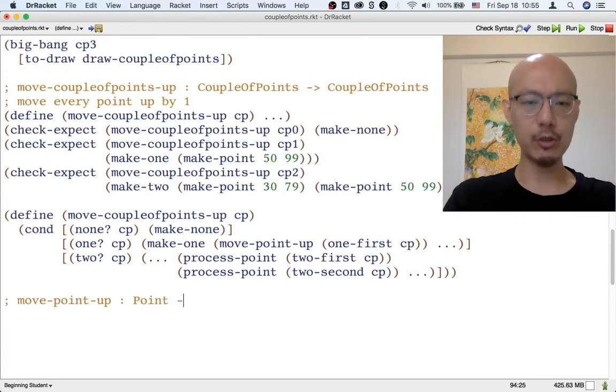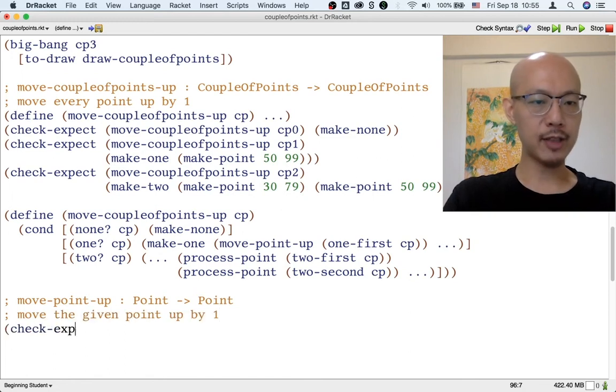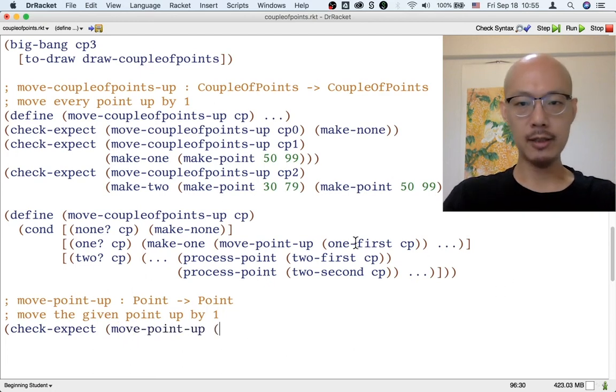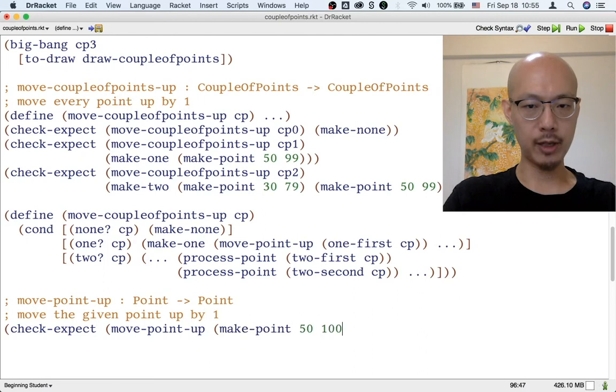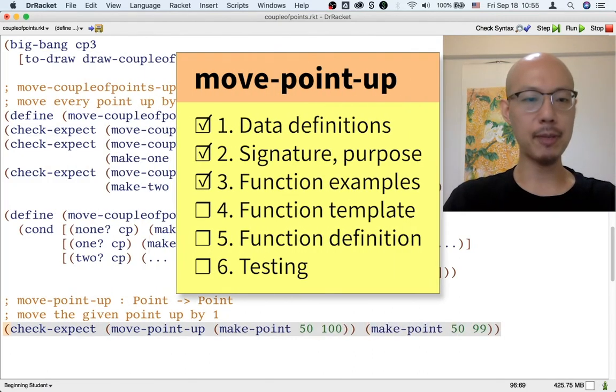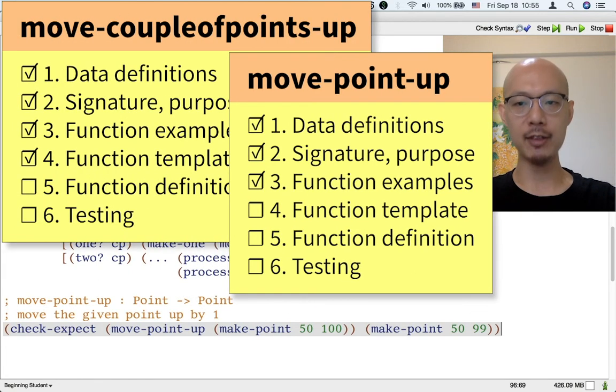What do we want this helper function to be like? Well, it should be a point to point function. It should move the given point up by one. And for example, if we give it the one first CP of CP1, in other words, if we give it make point 5100, it should give us back make point 5099. That will be an amazingly useful function to have right now. So let's just assume that we have it and move on.